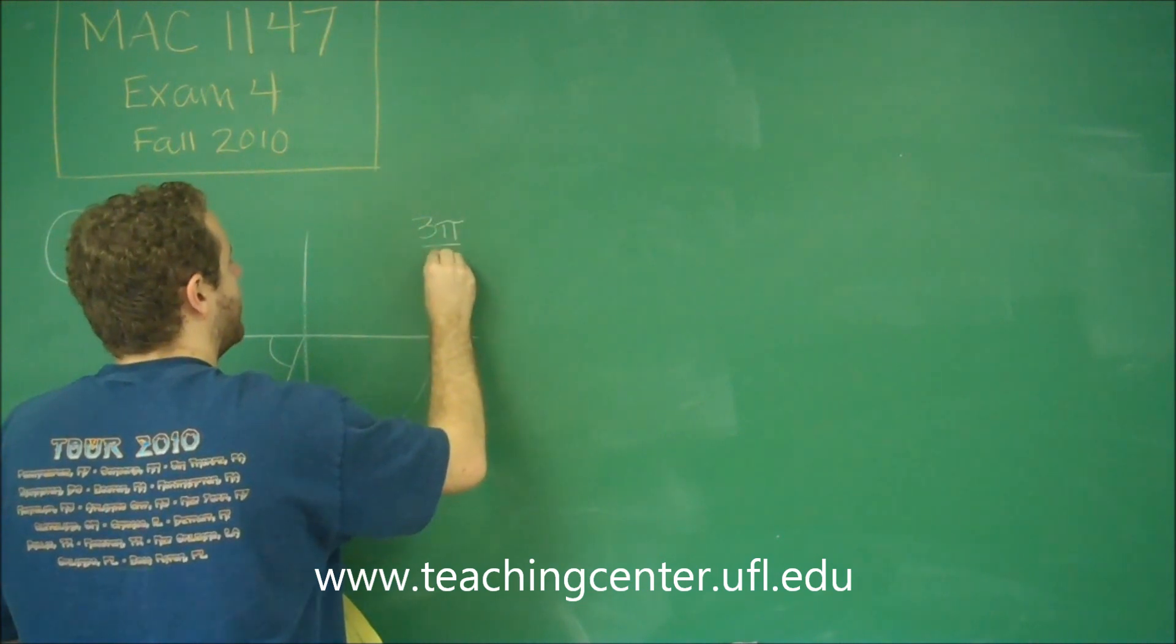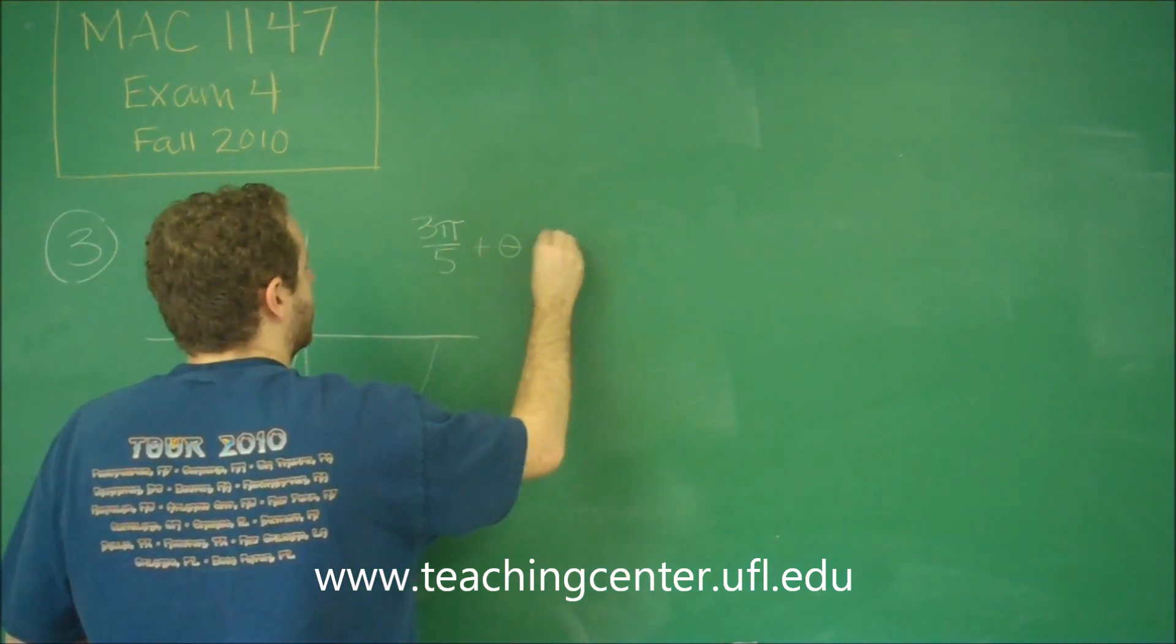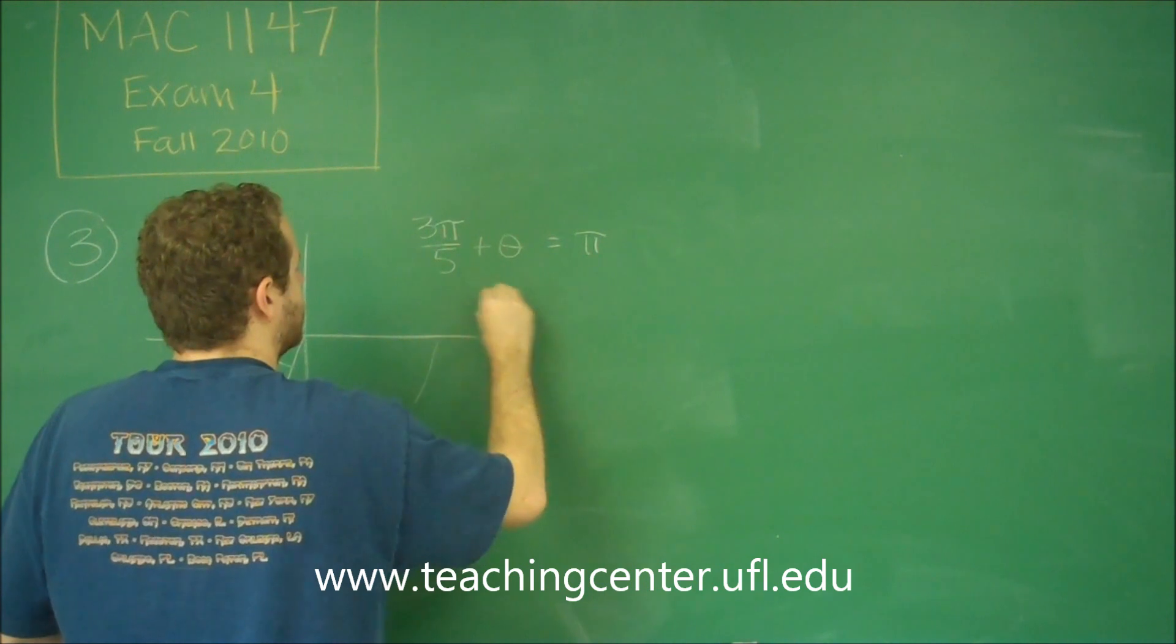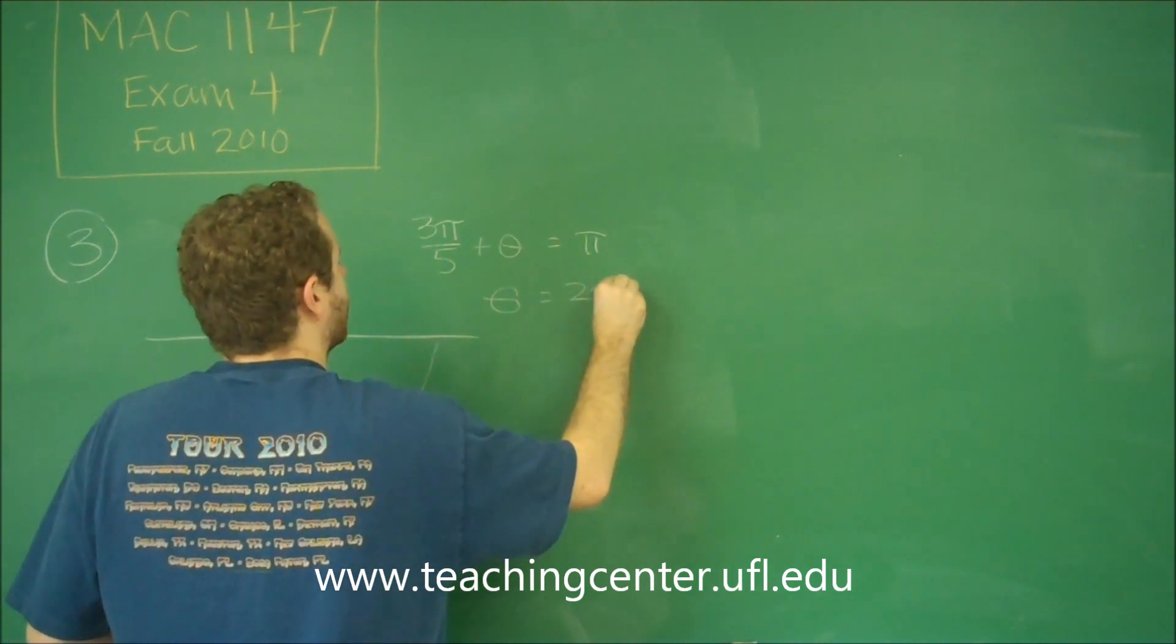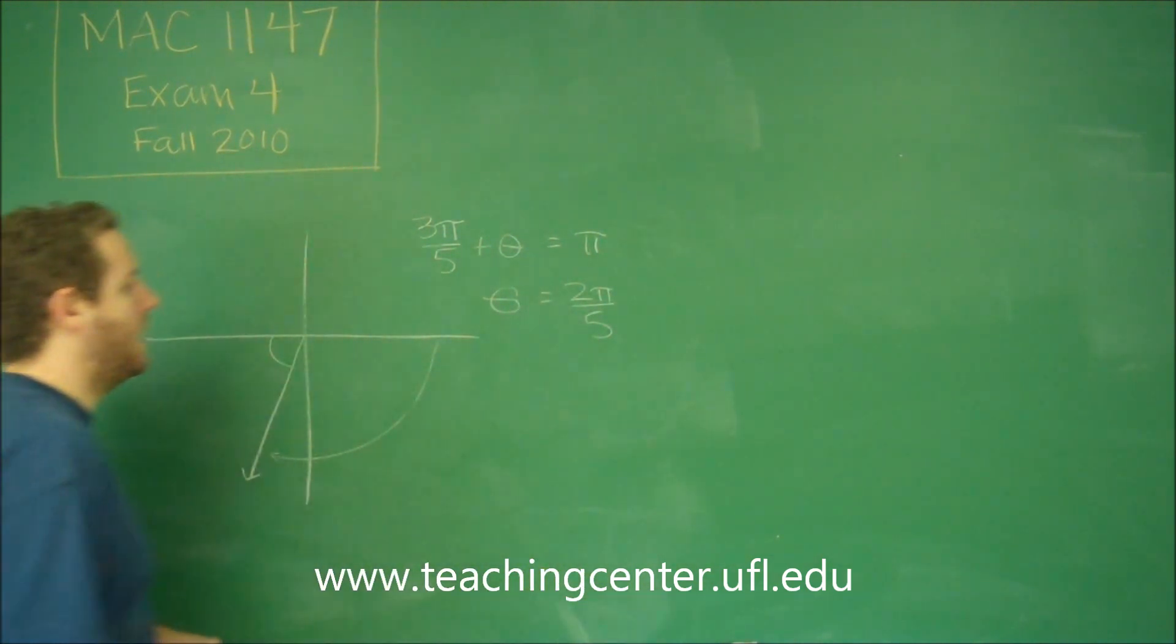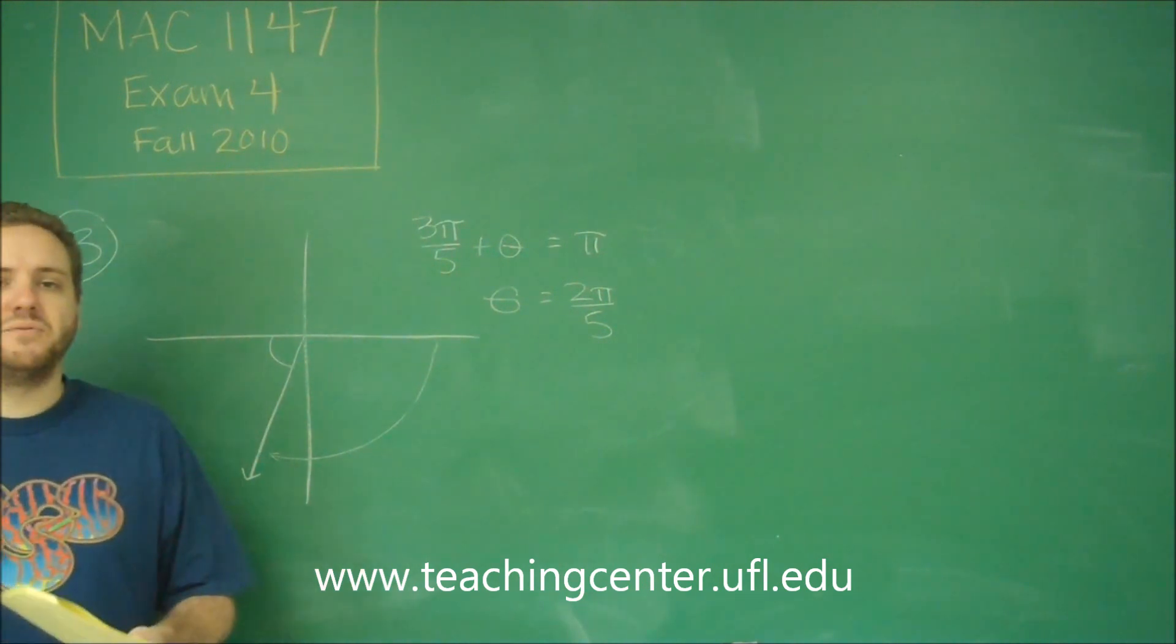So 3 pi over 5 plus theta has to equal pi. That means theta is 2 pi over 5, and that's going to be your reference angle.